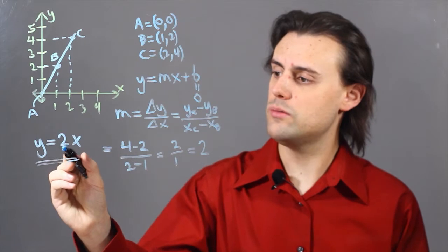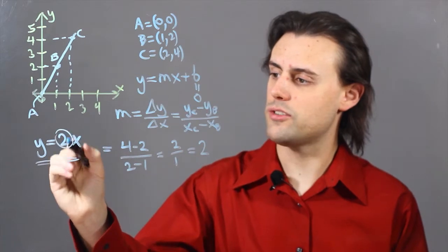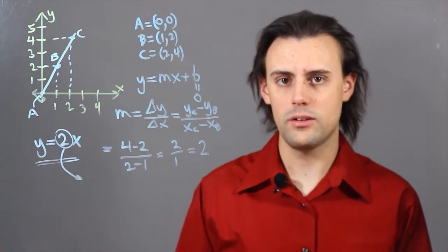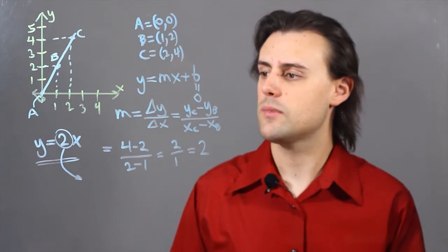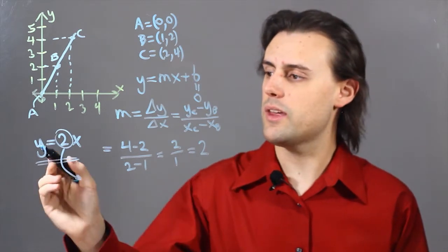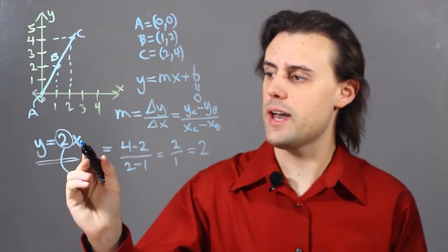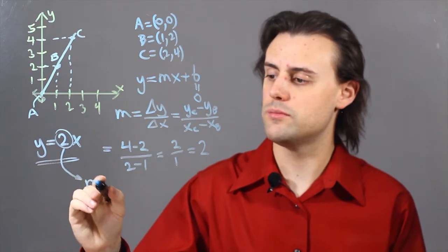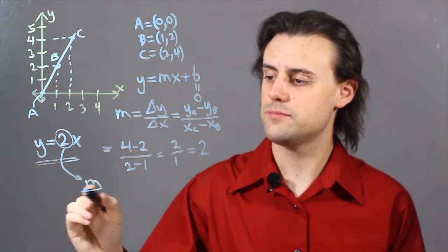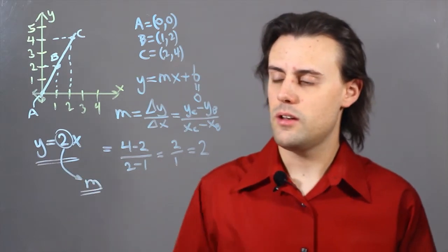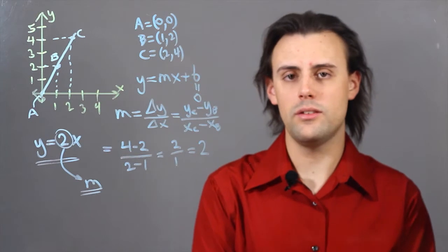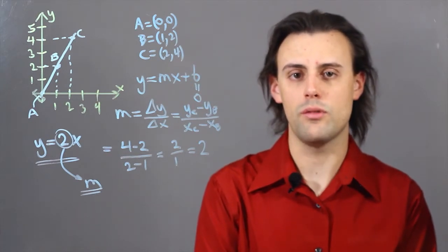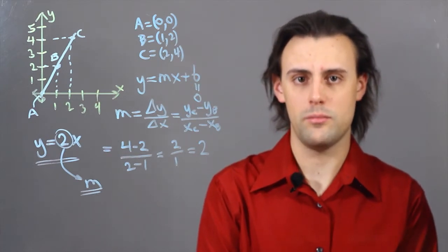So, 2, which is the slope, is sometimes called the constant of proportionality, meaning that y is proportional to x, but with a factor of 2. My name is Walter Unglaub, and this is how to graph a direct variation with given points.